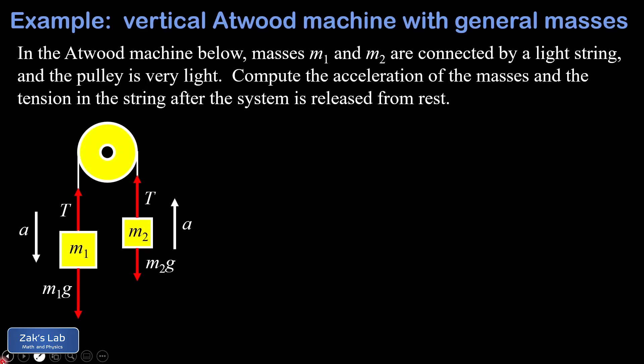There's the acceleration vectors for each of these masses. We're going to call downward positive for the analysis of m1 and upward positive for the analysis of m2. This means if m1 is actually bigger than m2, that a is going to be a positive number in each of those equations, but everything still works out even if m1 is smaller than m2.